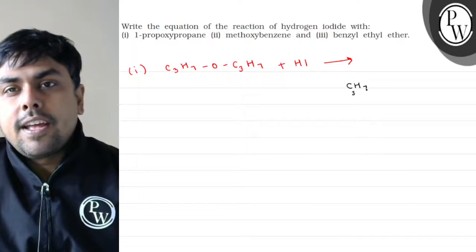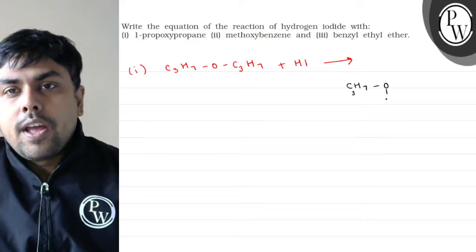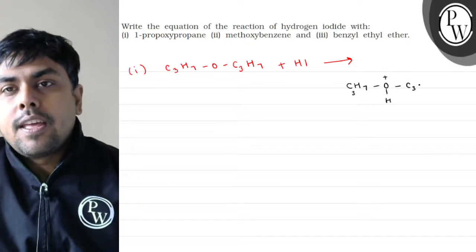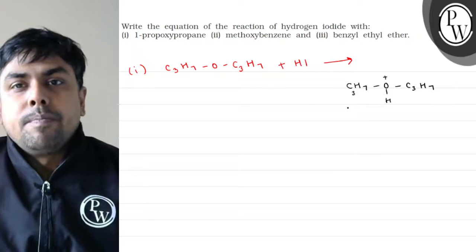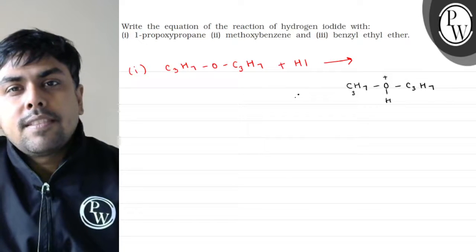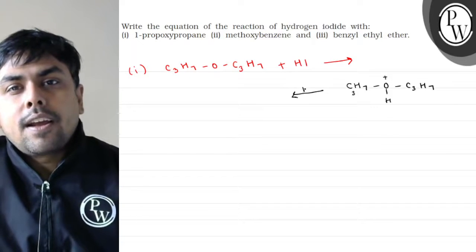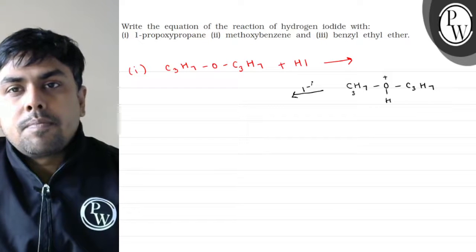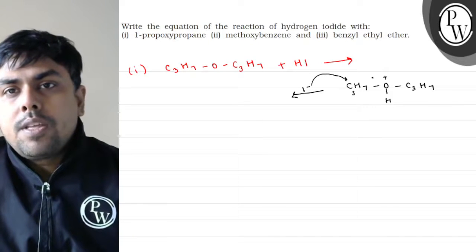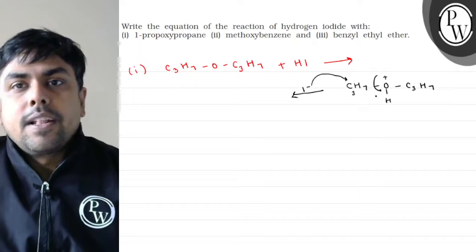OH+, then C3H7. I minus, I minus will attack on it. I minus attacks on it, and this is the leaving group.